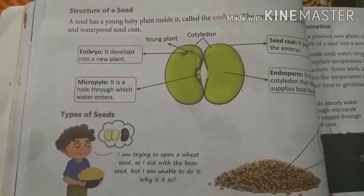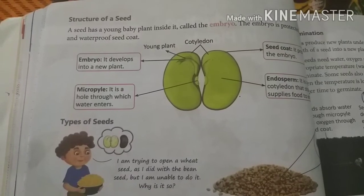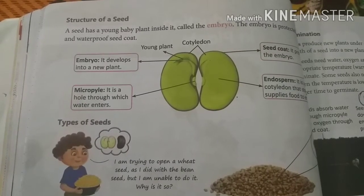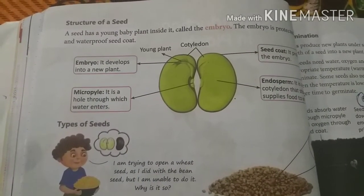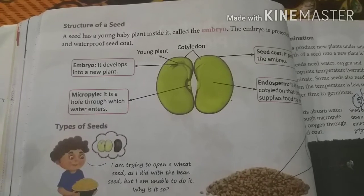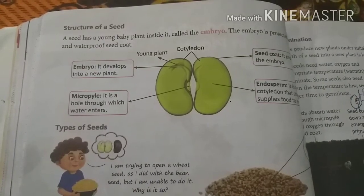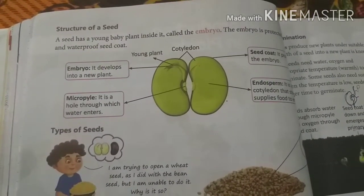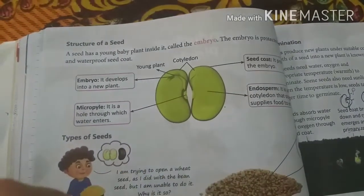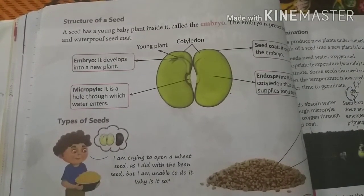This is a structure of a seed, and you can see it has two leaves or two cotyledons. The seed is open and has two parts. Seeds that can be divided into two parts are called dicotyledon, so this seed is a dicotyledon. You can also see a small hole called the micropyle — from this hole the seed takes in water.